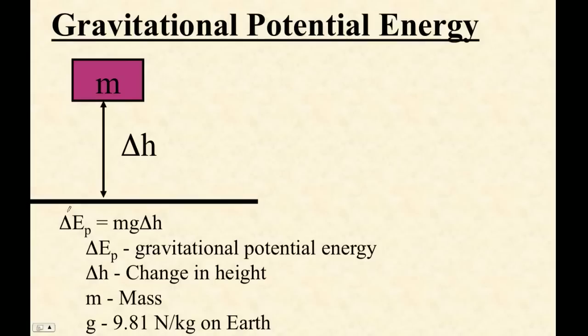So this is the IB formula. You should probably write that down. This is the gravitational potential energy. That thing is in joules. Change in height is, of course, in meters. Mass is in kilograms. And g is newtons per kilogram.